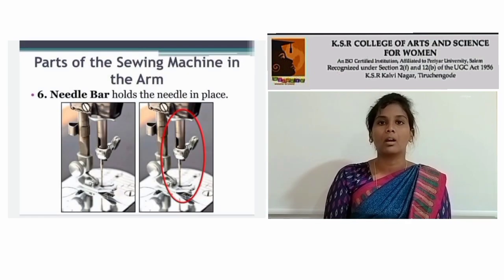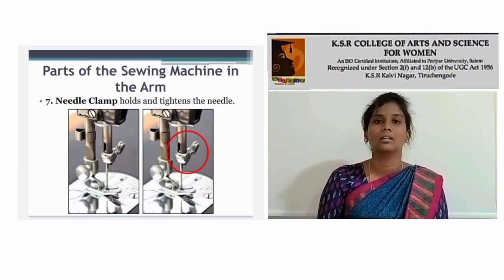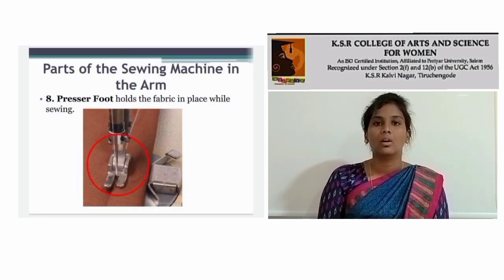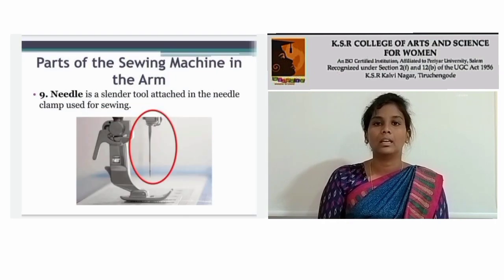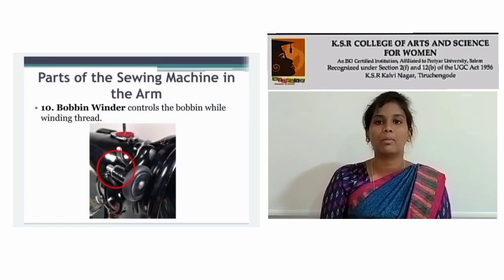Needle bar — holds the thread in place. Needle clamp — holds and controls the tightness of the needle. Pressure foot — holds the fabric in place while sewing. Needle — it is the tool attached in the needle clamp used for stitching. Bobbin winder — controls the bobbin while winding thread.